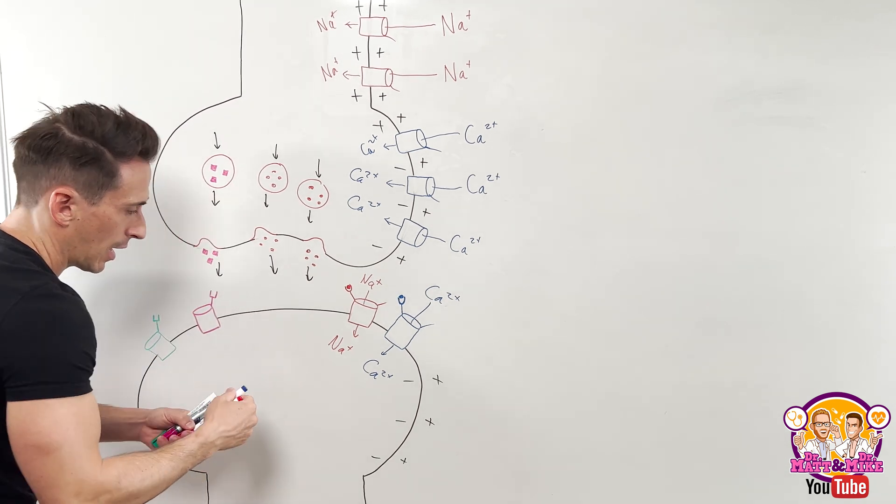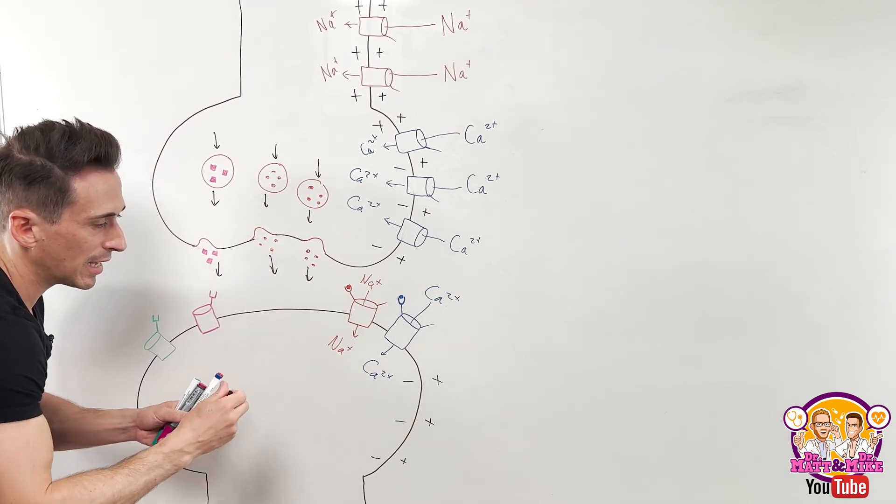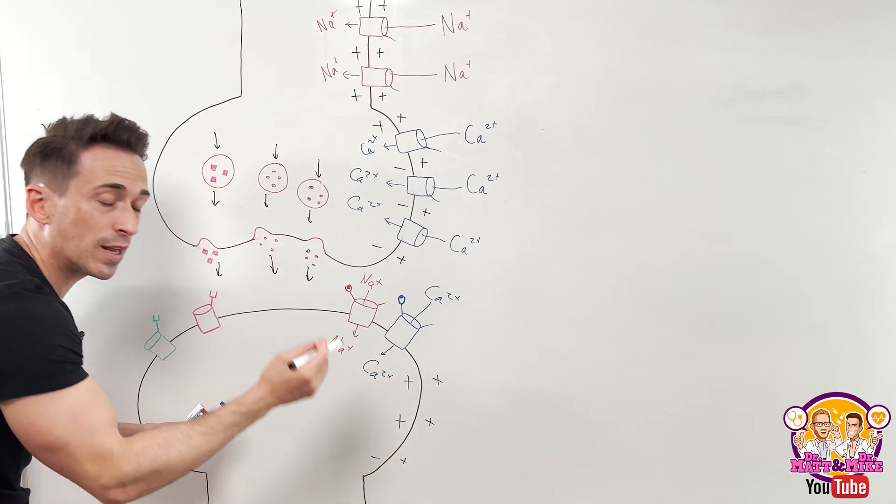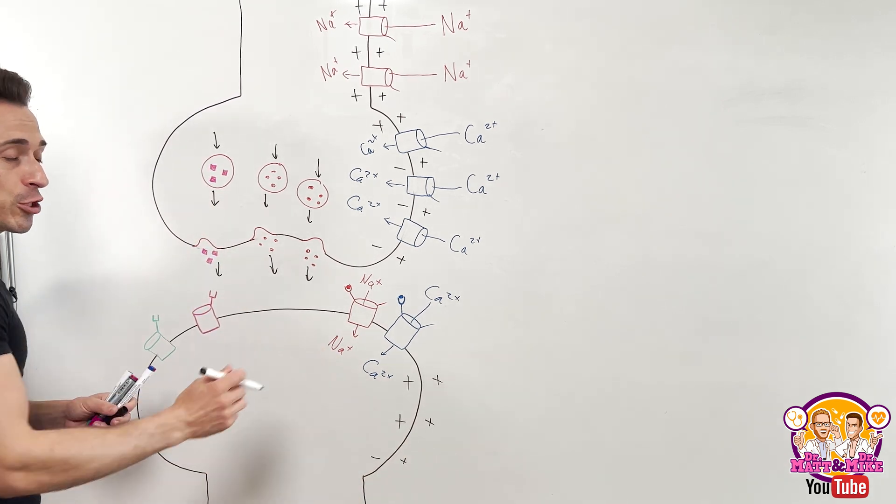Therefore, making it positive inside, whatever this excitatory tissue is, carrying that positive charge with it, the inside now becomes positive. You've now just triggered another action potential.